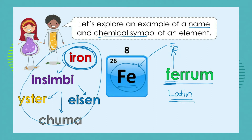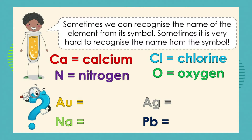So now we understand that our elements have names in all different languages, but they all have universal symbols so that no matter what language we're speaking, we can identify the element from its symbol. Sometimes we can actually recognize the name of the element from its symbol because the symbol is very similar to the English word for that element. But sometimes it can be very hard. For example, in the case of calcium, the symbol Ca was derived from the first two letters of calcium.